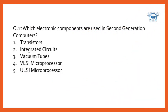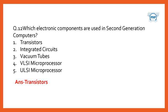Which electronic components are used in second generation computers? Options are transistors, integrated circuits, vacuum tubes, VLSI microprocessor, and ULSI microprocessor. The answer is transistors.